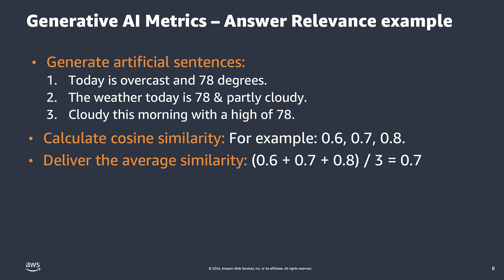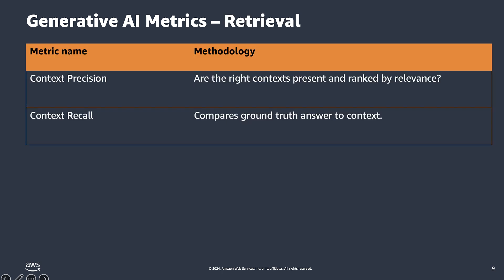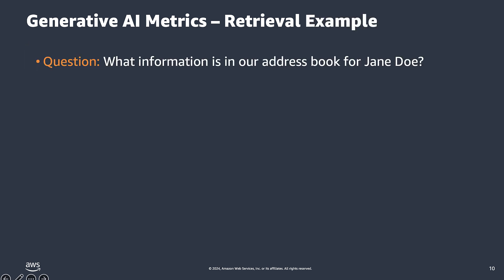Now that we have covered generation metrics, let's look at our retrieval metrics. Context precision looks at the given question, the ground-truth answer, and the context, and determines if the right contexts are present and are ranked by relevance. A high score means that the system is retrieving mostly relevant information. Context recall takes the number of sentences in the ground-truth answer which can be attributed to the context and divides by the total number of sentences in the ground-truth answer. A high score means that the system can retrieve most of the relevant information available. There are trade-offs between achieving high precision and achieving high recall.